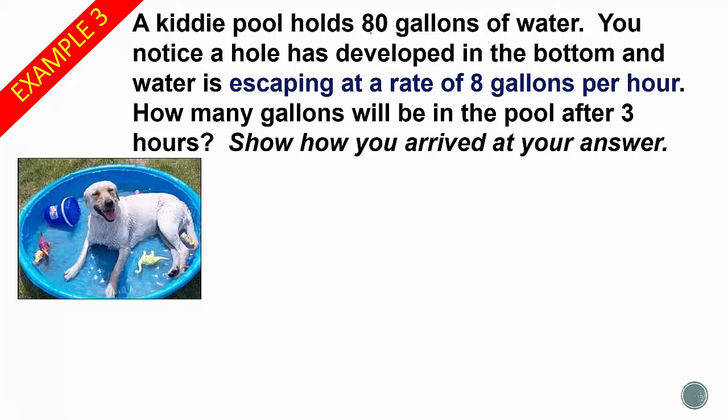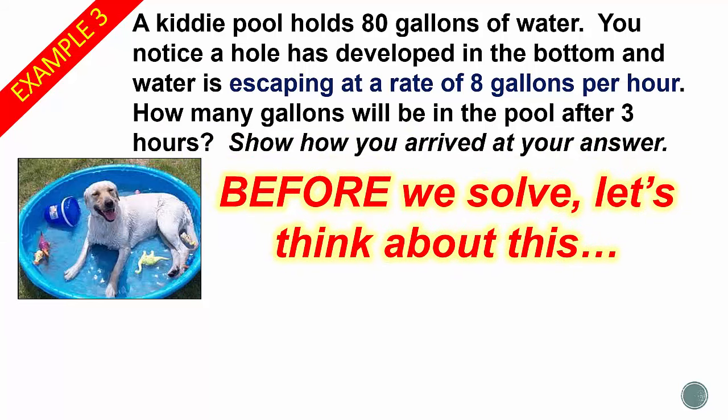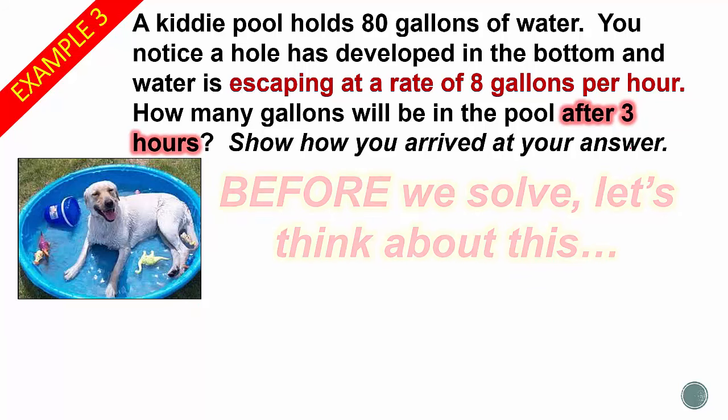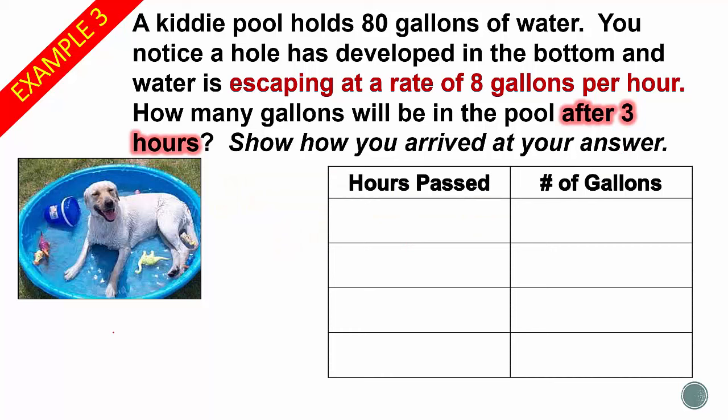Alright, last example. Kiddie pool holds 80 gallons of water. Notice the hole has developed at the bottom, and water is escaping at a rate of 8 gallons per hour. How many gallons will be in the pool after 3 hours? And we want to also show how we arrived at the answer, so we've got to show all our work. First things first, before we solve this, we need to think about it. We've got water escaping at a rate of 8 gallons per hour. So we have a pool that has 80 gallons, but water is escaping, which means that we're losing water. So we're going to be subtracting 8. And we want to find out how many gallons will be after 3 hours. So we can set up a table, as one way of doing it. Basically subtract 8 for each hour.